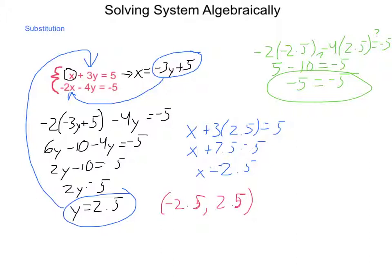So we isolate one of the variables, substitute it into the other equation, solve for one variable, and then take that and substitute it back and solve for the second variable.